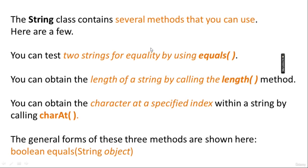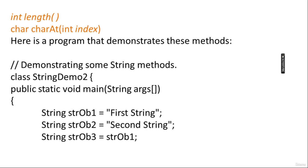The String class contains several methods you can use. You can test two strings for equality using equals(). You can obtain the length of a string by calling the length() method. You can obtain the character at a specified index within a string by calling charAt(). The general forms are: boolean equals(Object myObject); int length(); and char charAt(int index) — passing a particular index returns the character at that index.